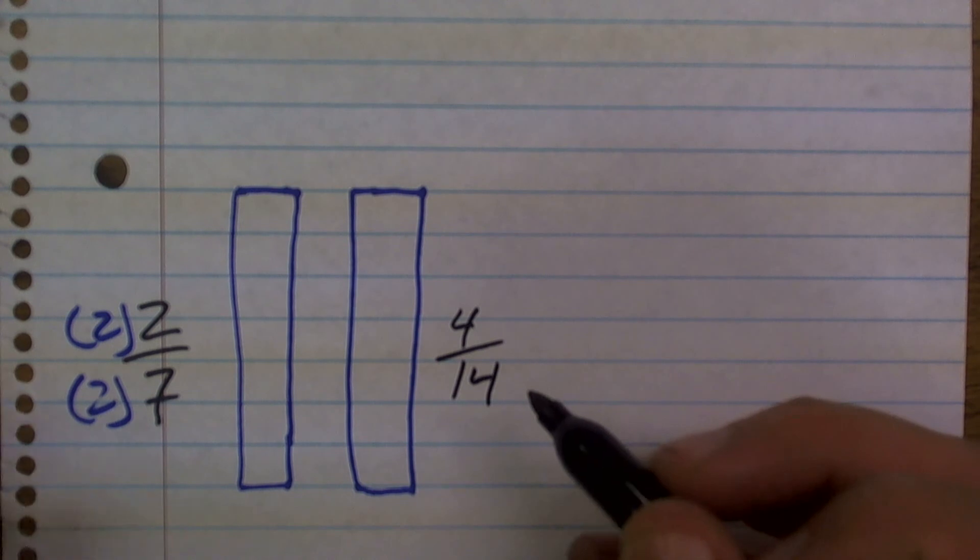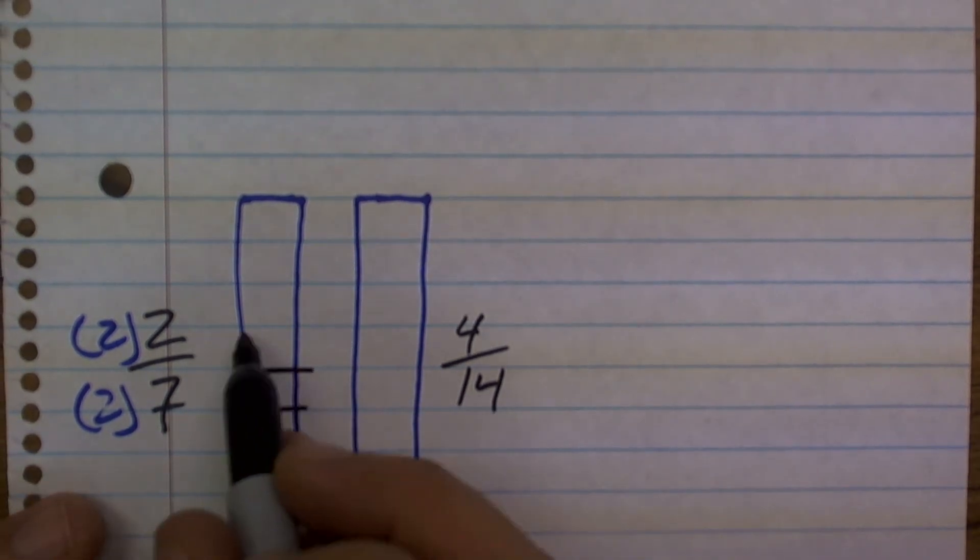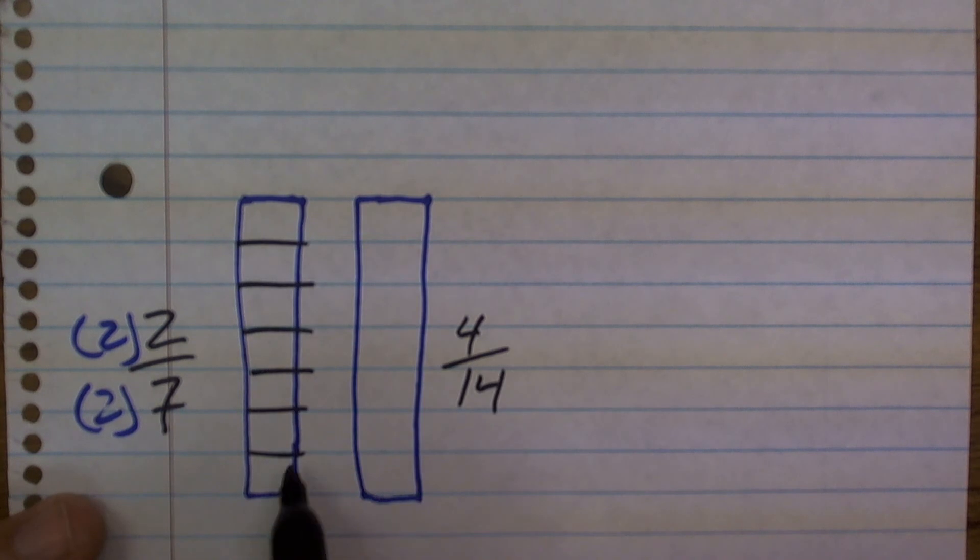So 2/7 would now multiply by top and bottom, would now become 4/14. So when I go ahead and write that out, 2/7 would look like this, broken up into seven parts, top two of them.